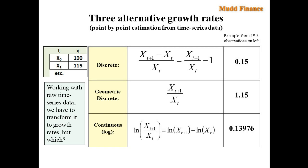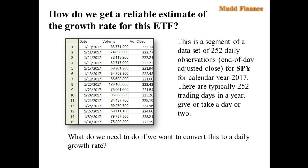So the question becomes for us, how do we get a reliable estimate of the growth rate for a stock? For example, this exchange traded product shown here. This is a segment of a 252 daily observation cycle for SPY, the tracking stock that tracks the S&P 500. There are typically 252 trading days in the year, give or take a day or two, and this is a segment that shows the 15 trading days at the beginning of the year. So what do we do if we want to convert this to a daily growth rate?